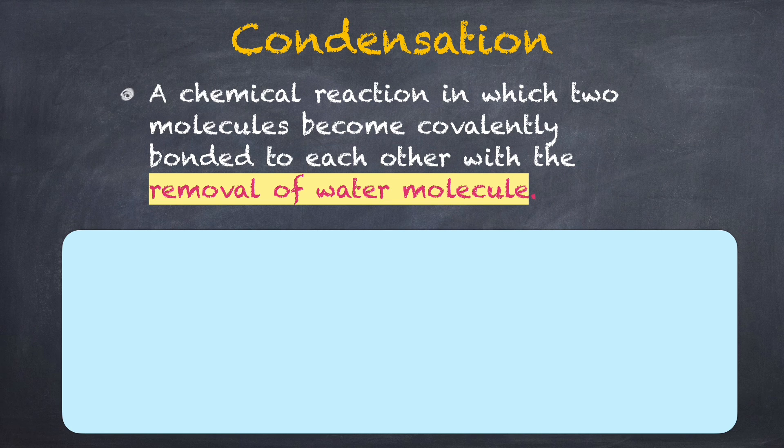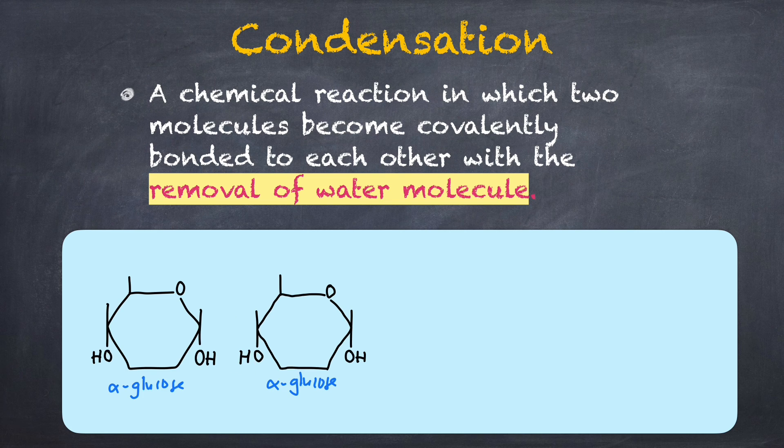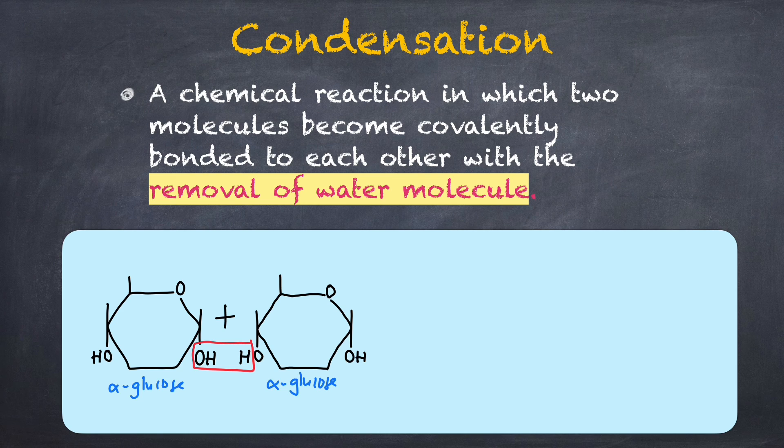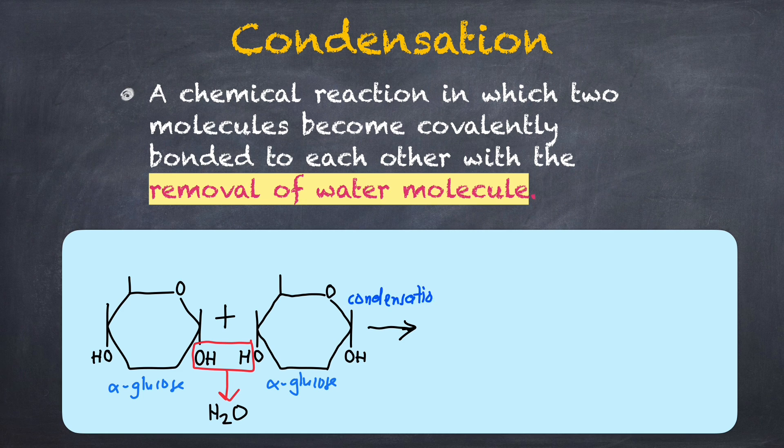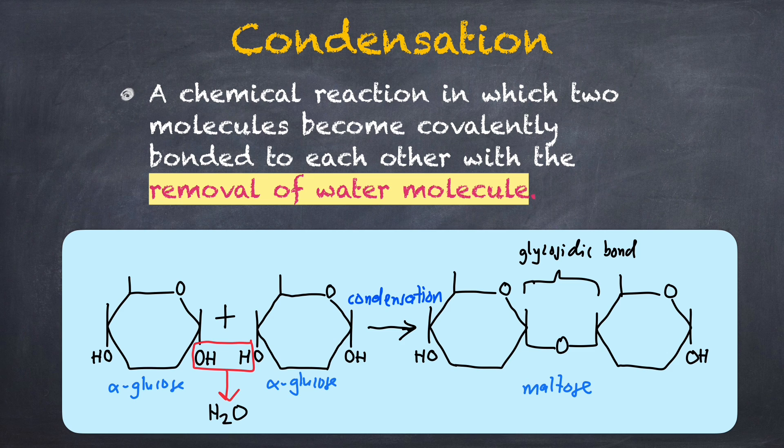Condensation is a chemical reaction in which two molecules become covalently bonded to each other with the removal of a water molecule. When two alpha glucose are together, OH from one alpha glucose is removed from carbon number one, and a hydrogen atom from another alpha glucose is removed from carbon number four as H2O. Through the process of condensation, we form maltose that is joined together by a glycosidic bond.